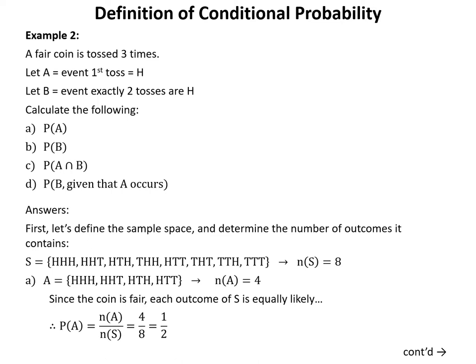In example two, a fair coin is tossed three times. We define event A as the event that the first toss comes up heads, and event B as the event that exactly two of the three tosses are heads. We are asked to calculate the probability of A, the probability of B, the probability of A intersection B, and the probability of B given that A occurs.